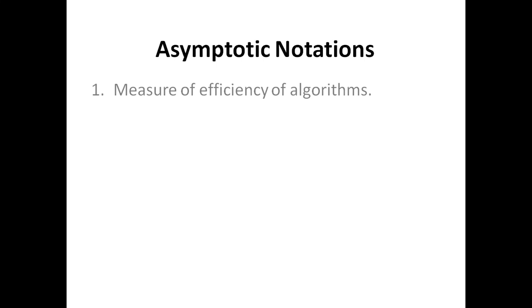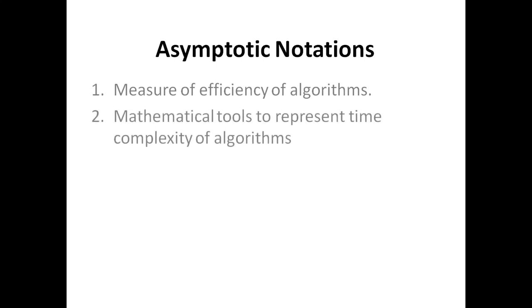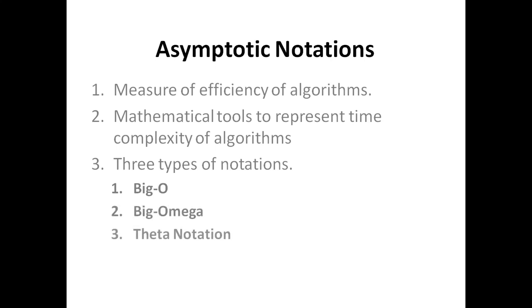Today we are going to look at asymptotic notation — what it is and how it helps us find the complexity of any algorithm. We use asymptotic notation to measure the efficiency of an algorithm independent of the machine, independent of the CPU, independent of the RAM. This is a mathematical tool to represent the time complexity of an algorithm. Basically, three types of notations exist: Big O, Big Omega, and Theta.